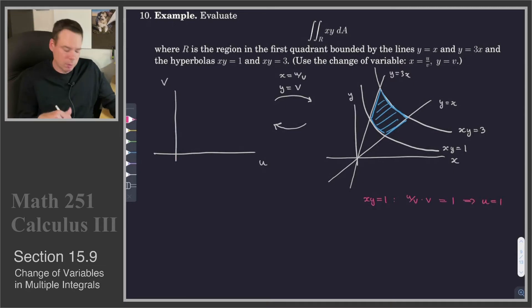Oh, that's very nice, because the hyperbola now just becomes a straight line, u equal to 1. So, there we go. There's our u equals 1 line.